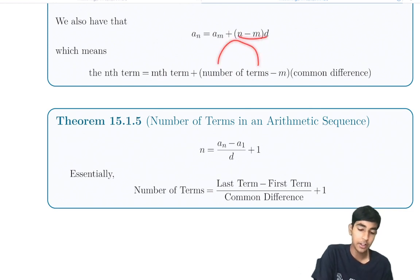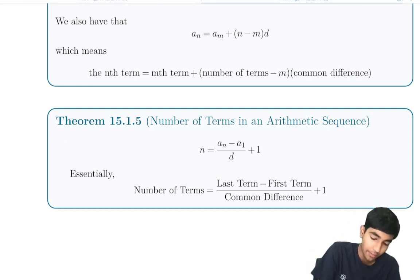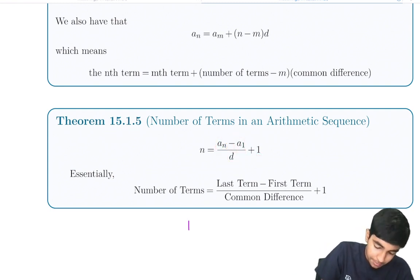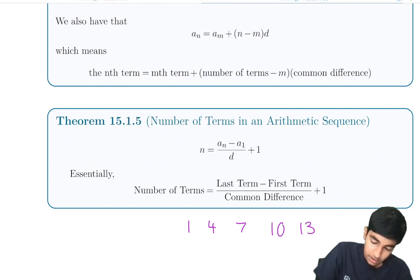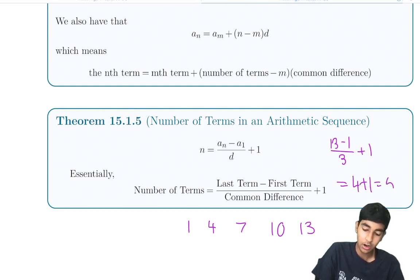You can also find the number of terms of an arithmetic sequence by taking the last term minus the first term, divided by the common difference, plus 1. For example, if the arithmetic sequence goes up to 13 with first term 1 and common difference 3, you get (13 minus 1) over 3, plus 1, which is 4 plus 1 equals 5. And indeed, there are five terms.